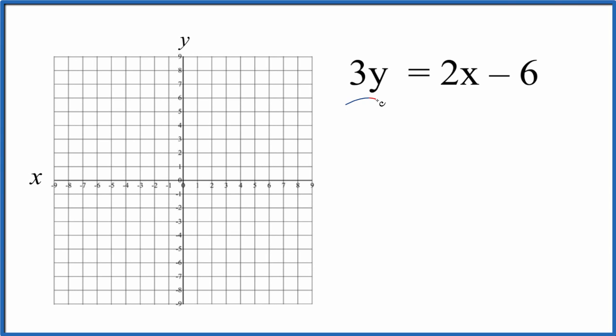Let's graph the linear equation 3y equals 2x minus 6. And we're going to do this in slope intercept form. So what we need to do is get this equation in this format right here. It's pretty close. But let's take and divide both sides by 3, and then that'll give us y by itself.